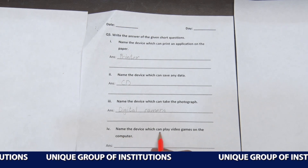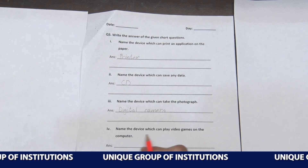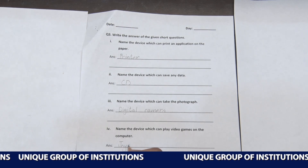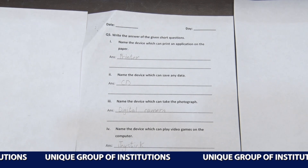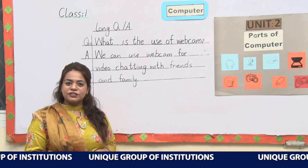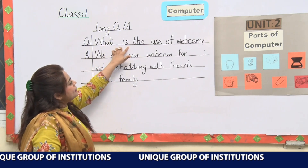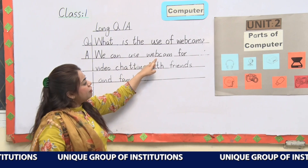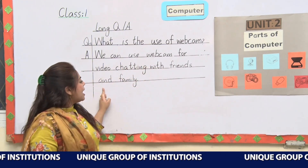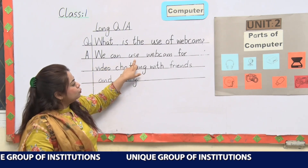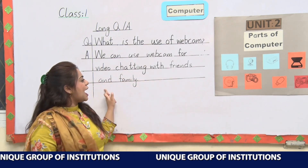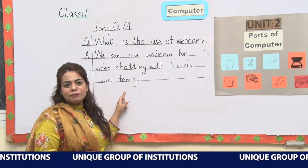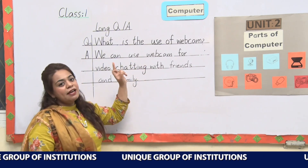Last question: name the device which can play video games on the computer — joystick. J-O-Y-S-T-I-C-K. Joystick. Now we will do the long question. Question: what is the use of webcam? Answer: we can use webcam for video chatting with friends and family. Webcam ko hum video chatting ke liye use karte hain, friends ke saath aur family ke saath. Thank you.